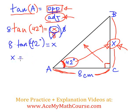Then we can plug that into the calculator. I will do so in one step. 8 times the tangent of 42 degrees is equal to 7.203. Three decimal places is good enough.